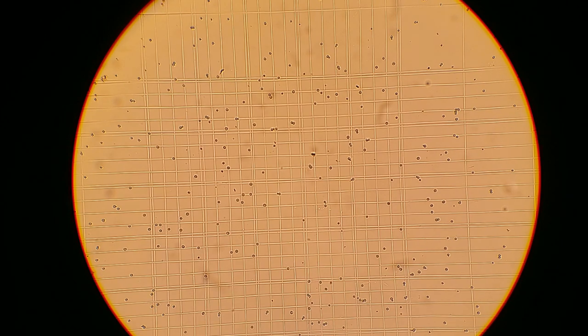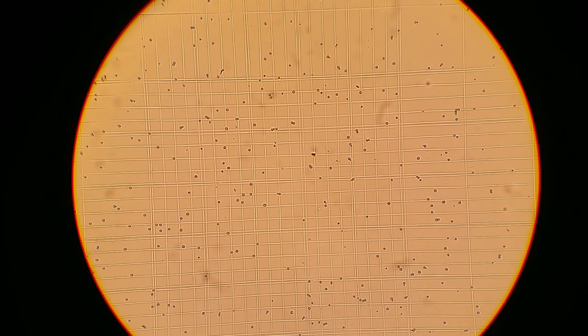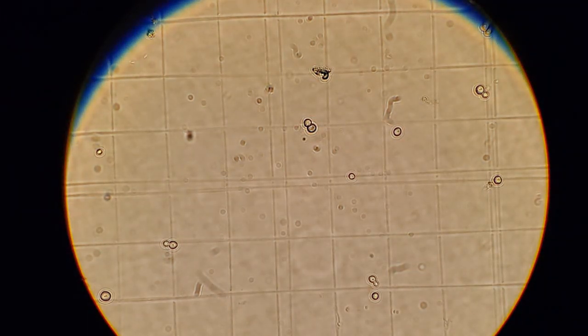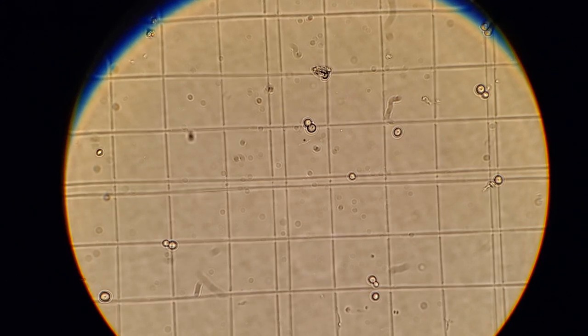In this episode I'll be showing you how to perform cell counts using a hemocytometer. I will also show you how this can be combined with viability staining using Tri-Pan Blue to get a more accurate measure of your true pitch rate.